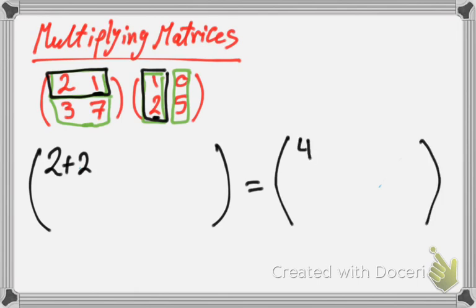So, the first row in the first column, its value is going to be 4.